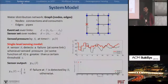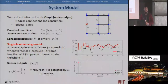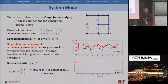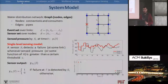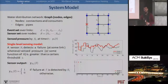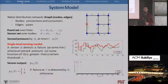To begin with, we model the water distribution network as a graph in which the pipes or links are represented by the edges, and the nodes represent the consumers or the connections of these pipes. Since we are talking about pipe failures, the event set is simply defined over the set of links or edges, and our sensor set is the set of nodes.